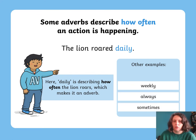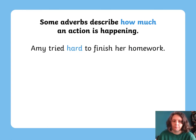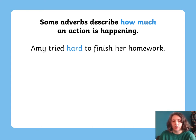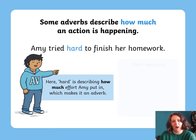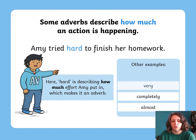You can see all of these adverbs are adding extra information in different ways. Another type describes how much: 'Amy tried hard to finish her homework.' The word 'hard' is the adverb because it tells us more about how much she tried. Some other examples of degree adverbs are: very, completely, and almost.